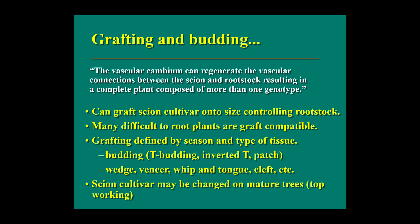Grafting and budding: The vascular cambium can regenerate the vascular connection between the scion and rootstock, resulting in a complete plant composed of more than one genotype. Two plants are involved — one is used as the rootstock and another as the scion. The rootstock provides nutrients and water to the scion from the soil.